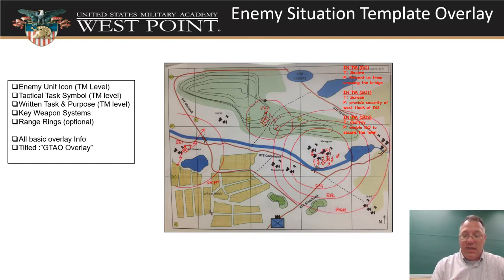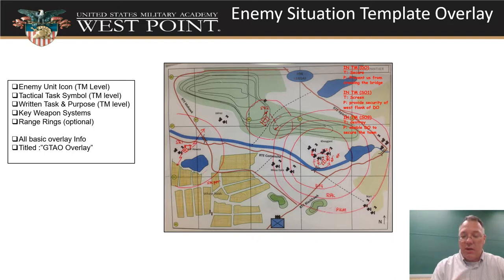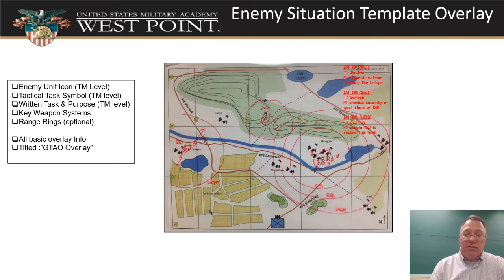For each team, include a written task and purpose — for example, 'Team A: decisive operation task — secure; purpose — prevent us from crossing the bridge.' Put those down for each team based on your assessment. For key weapon systems, don't list all the rifles — that risks wrong numbers and clutters things up. We only care about key weapons: machine guns, rocket launchers, things like that. Place them with an orientation showing where they're located and what direction they're pointed.